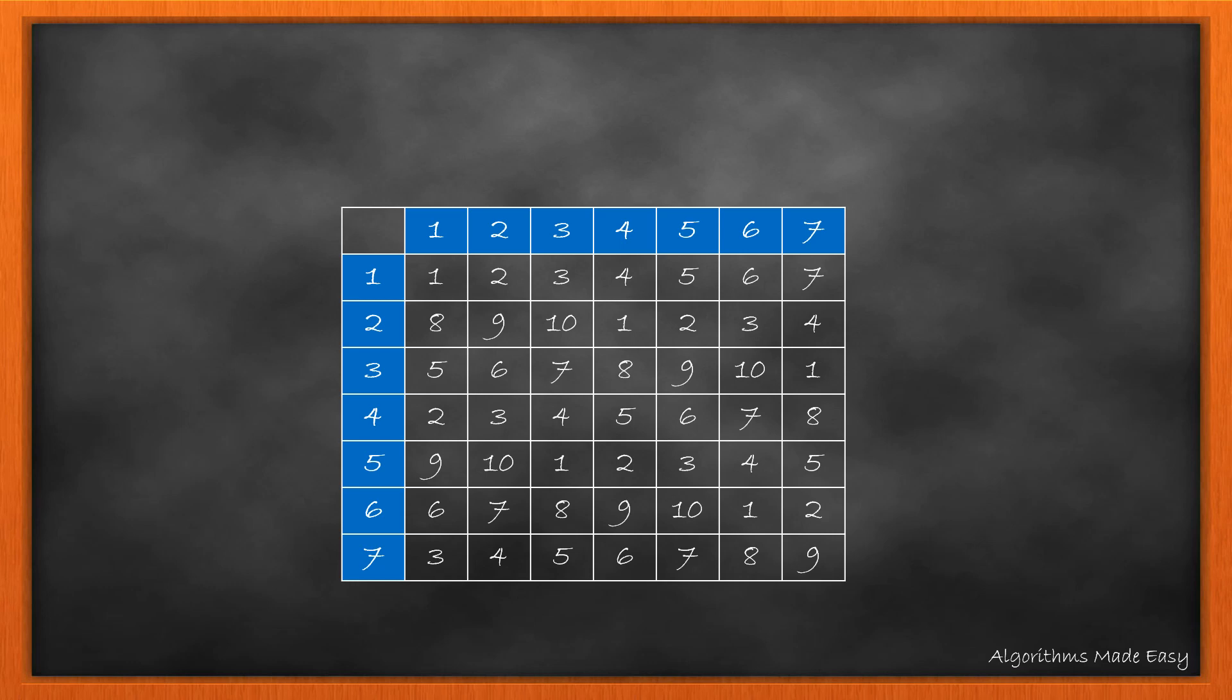Thus what we do is we take this matrix that has 7 rows and columns. In this we write the numbers 1 to 10 repeatedly. We see that the first 4 chunks of the number 1 to 10 are complete but this one has only 9 digits.